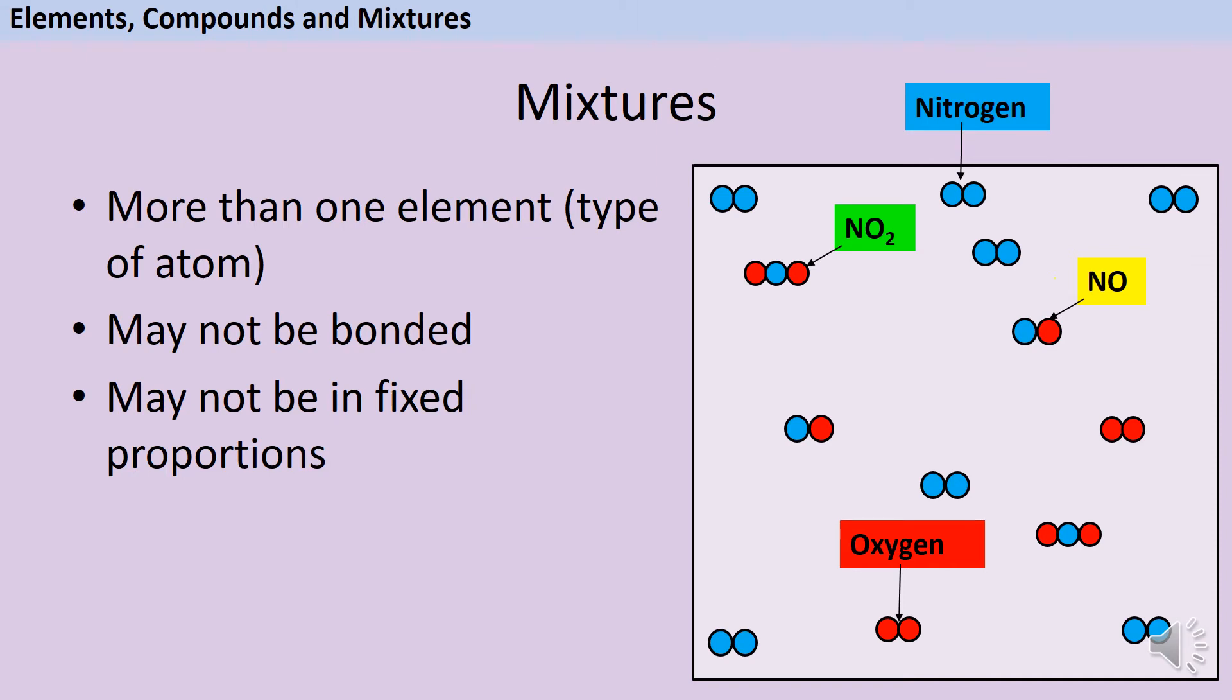So when that happens, some of the nitrogen might react with a little bit of oxygen to make some nitrogen monoxide. But some of the nitrogen might react with a bit more oxygen to make some nitrogen dioxide. Now, even though both of those are compounds, if I'm looking at a sample that contains both of them, then I would have to call it a mixture because the nitrogen and the oxygen aren't always in fixed proportions.